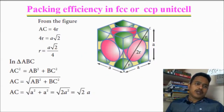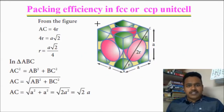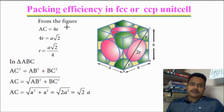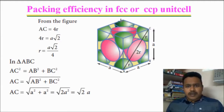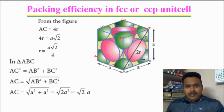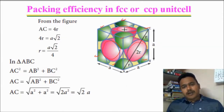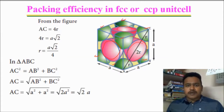Now we go to the lecture: packing efficiency, otherwise packing fraction, in FCC or CCP unit cell. This is FCC — face-centered means all the corners are occupied by spheres, and the center of each face also has atoms. All six faces and all corners are occupied by spheres.